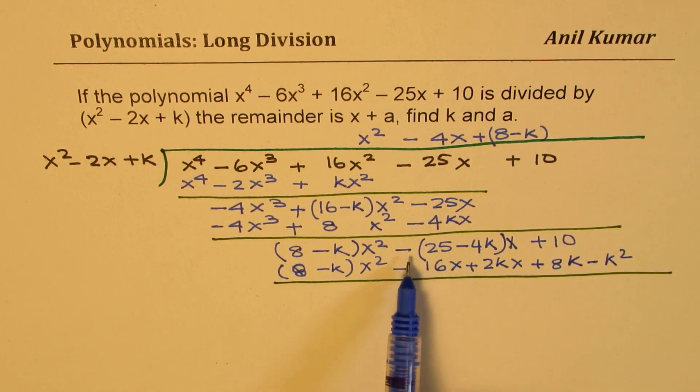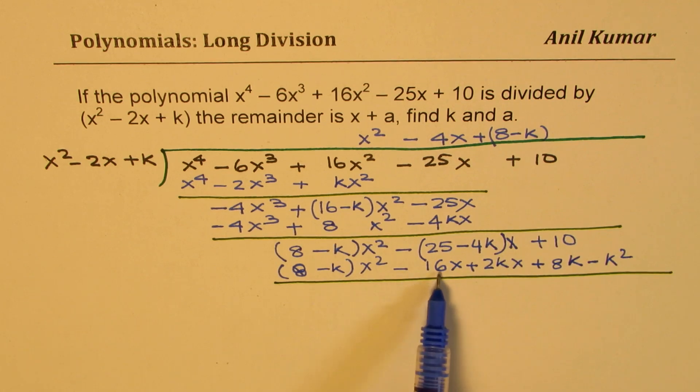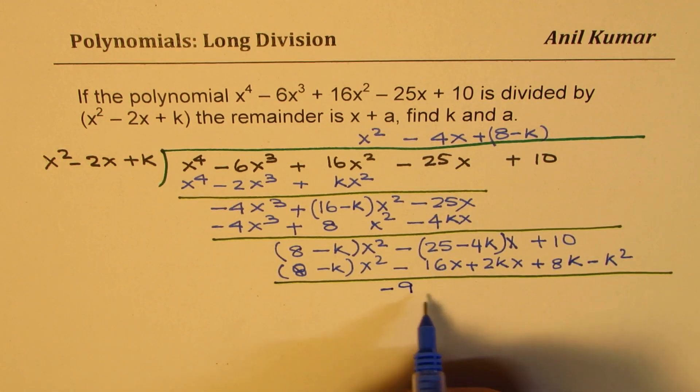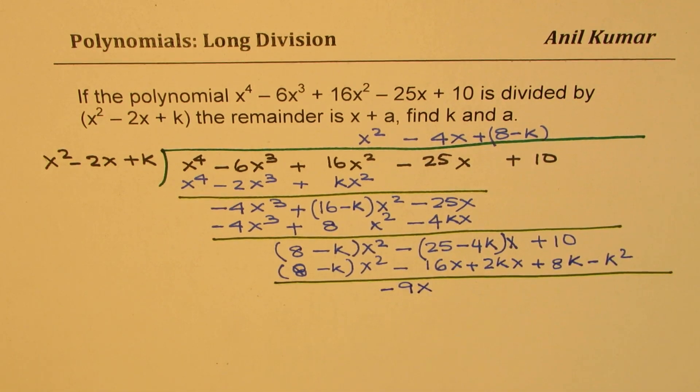Now let's take away these terms and see what is the remainder for us. Here we have -25x and -16. So when you take away, we get -9x. Let me write -9x.